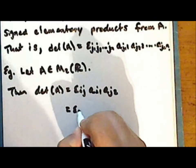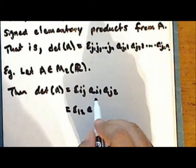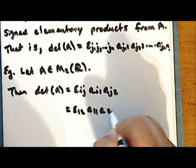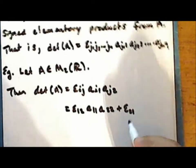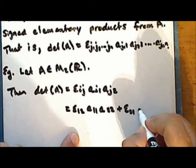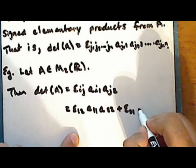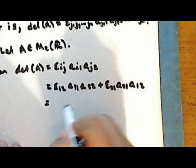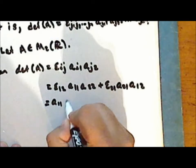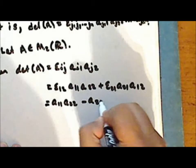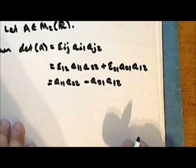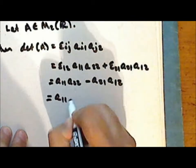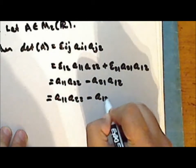We get epsilon sub 1,2 — meaning I is 1, J is 2 — giving A sub 1,1 times A sub 2,2; plus epsilon sub 2,1 — meaning I is 2, J is 1 — giving A sub 2,1 times A sub 1,2. This yields A sub 1,1 times A sub 2,2 minus A sub 2,1 times A sub 1,2, or reordering, A sub 1,1 times A sub 2,2 minus A sub 1,2 times A sub 2,1.